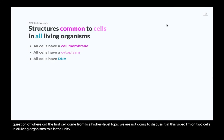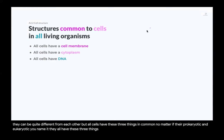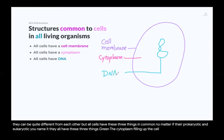Structures common to cells in all living organisms — this is the unity part. We have many different types of organisms with many different types of cells, and they can be quite different from each other. But all cells have these three things in common, whether prokaryotic or eukaryotic: a cell membrane, cytoplasm filling up the cell, and DNA.